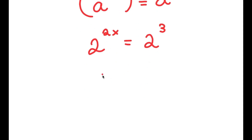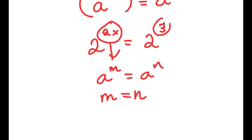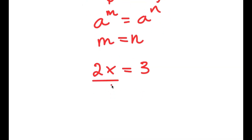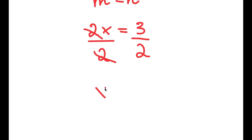If I have something in the form a to the power of m equals a to the power of n, this means m equals n. So 2x equals 3. This is a simple equation — all I have to do is divide both sides by 2, and I get x is equal to 3 over 2.